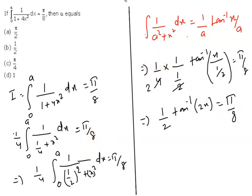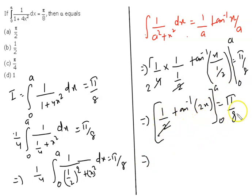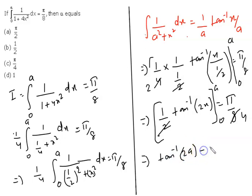Now I am going to put in the limits. The limit is from 0 to a. After multiplying both sides by 2, we can write: (1/2) tan⁻¹(2x) evaluated from 0 to a equals π/8, which gives tan⁻¹(2a) minus tan⁻¹(0) equals π/4.